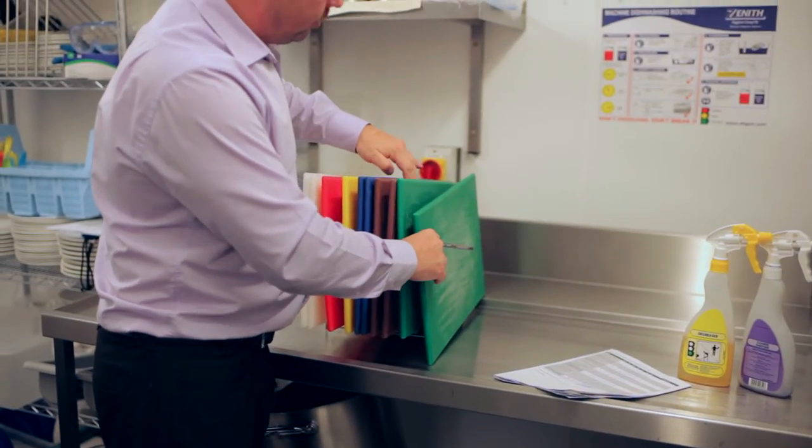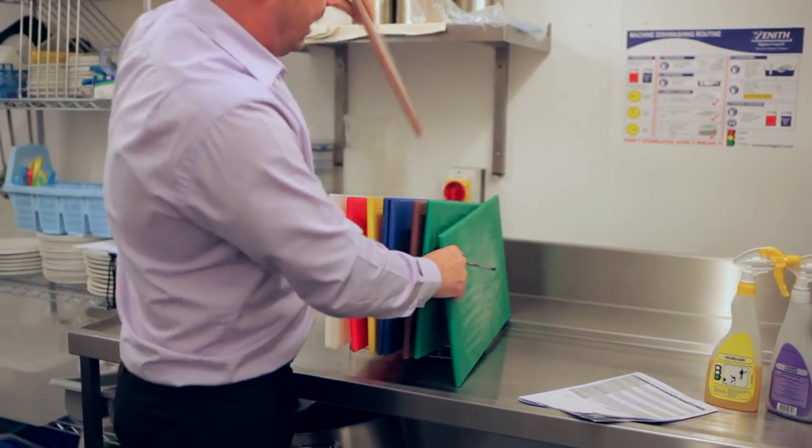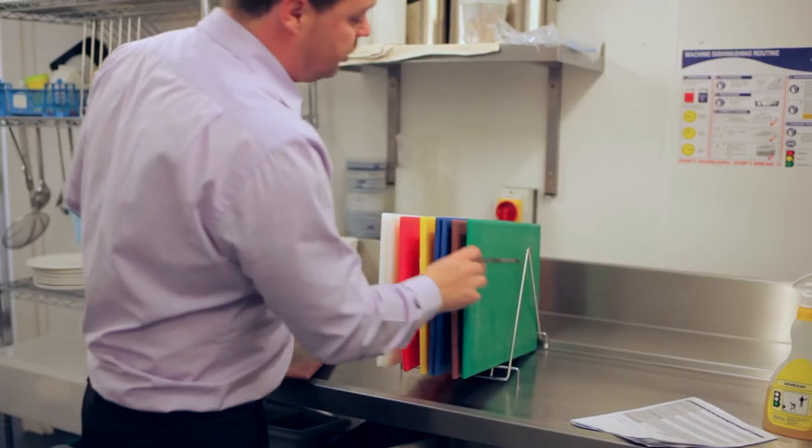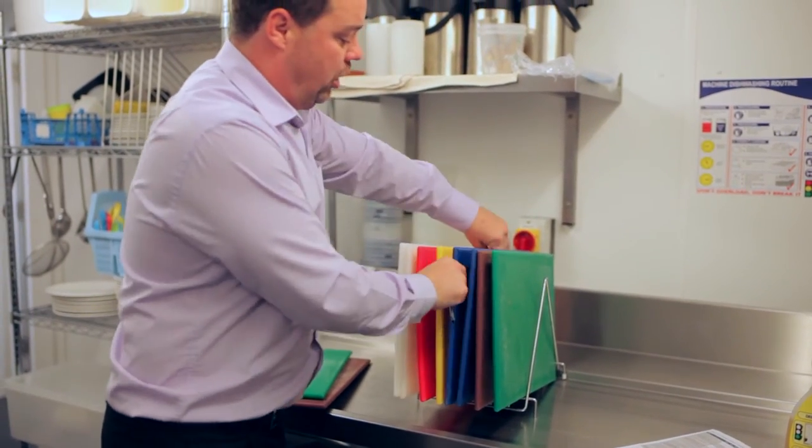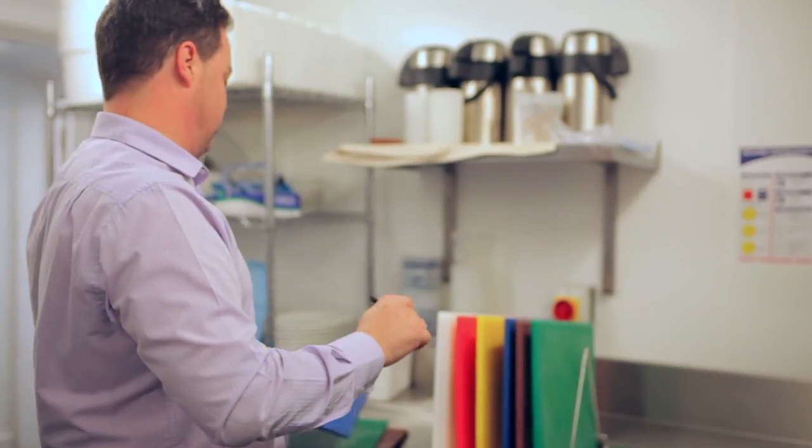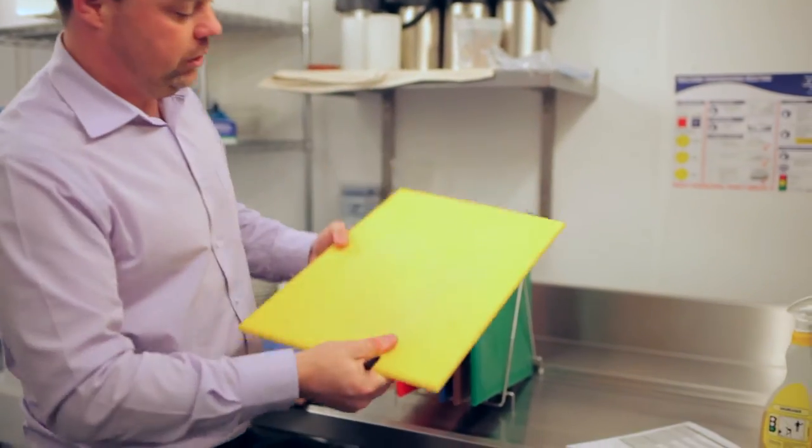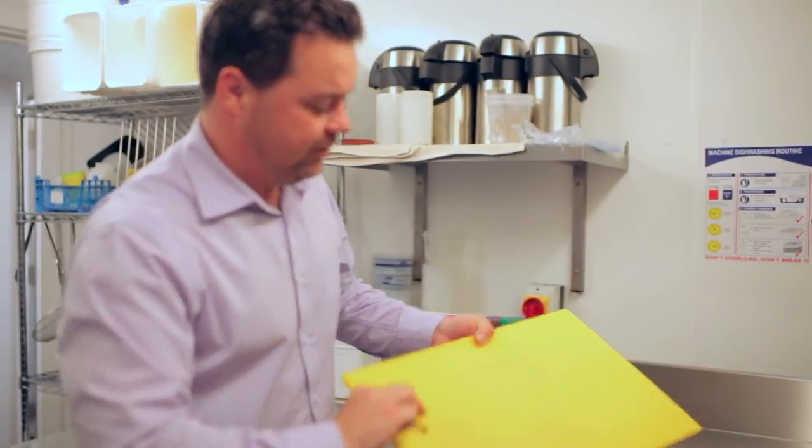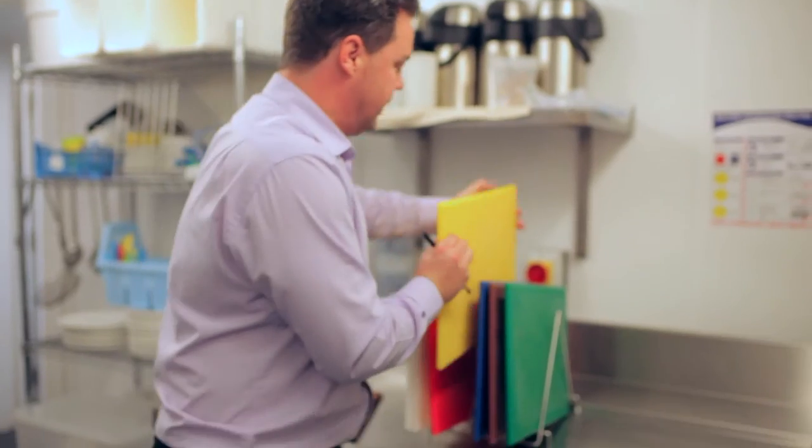You can't have the chopping boards stacked together. They need to have a gap between each one, like so, so that air can circulate and mould and bacteria is not allowed to breed. All these chopping boards, in my view, are scratched and deteriorated. They need to be replaced.